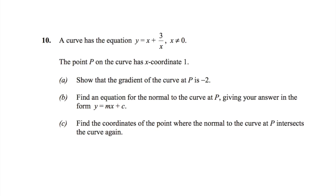A curve has the equation y equals x plus 3 over x, where x cannot be 0. The point P on the curve has x-coordinate 1. Show that the gradient of the curve at P is minus 2.